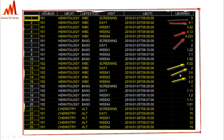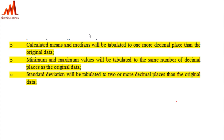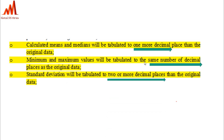In this dataset, this is what the SAP mentioned by the statistician says about decimal alignment: if you calculate the mean and median, it should be one more decimal place than the original data. For example, if the dataset contains two decimals, the mean and median should have three decimals. Minimum and maximum should have the same number of decimals as the raw data. The standard deviation should have two more decimals — so if the raw data has two decimals, standard deviation will have four.